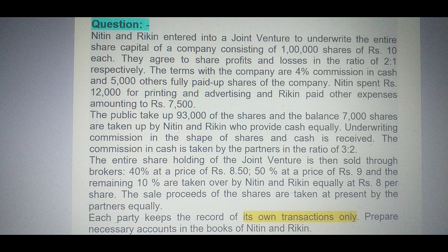Rikin paid other expenses amounting to Rs 7,500. The public took up 93,000 shares and the balance 7,000 shares are taken up by Nitin and Rikin, who provide cash equally. Underwriting commission in the shape of shares and cash is received. The commission in cash is taken by partners in the ratio of 3:2.